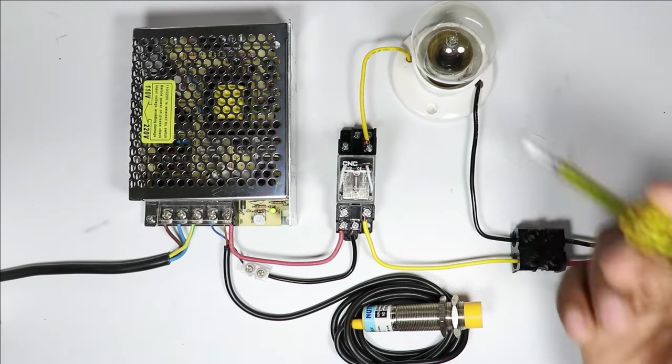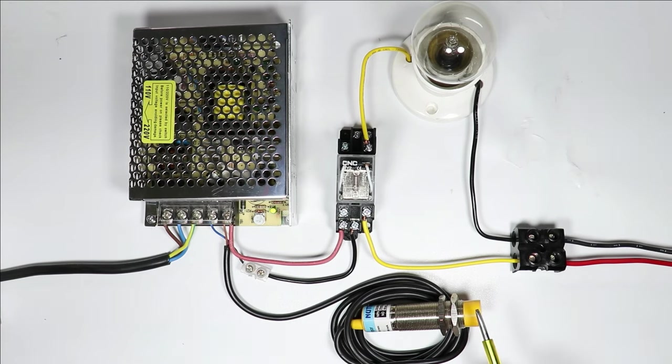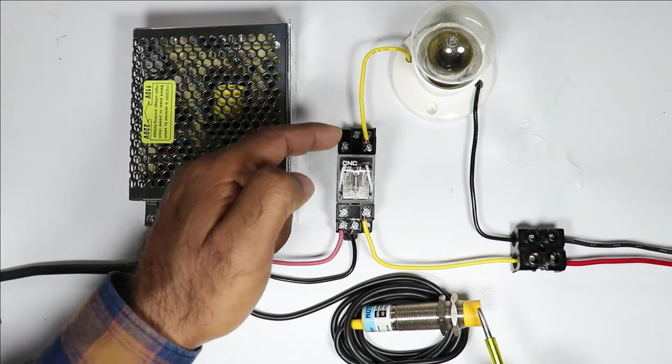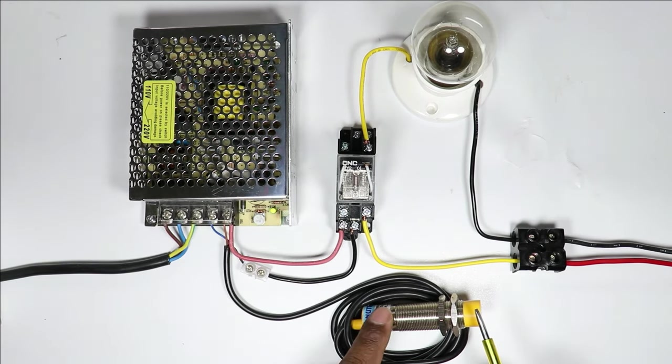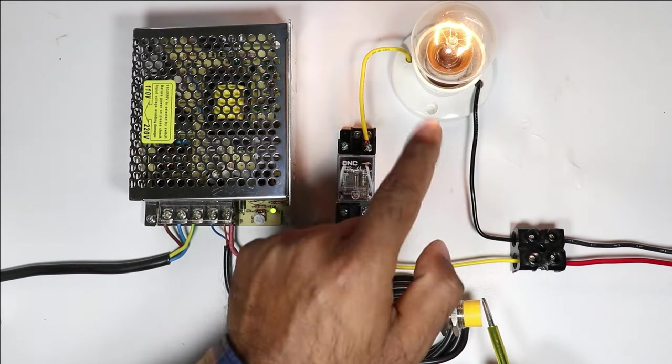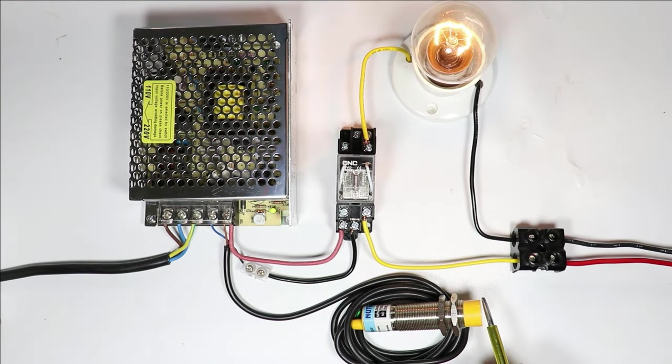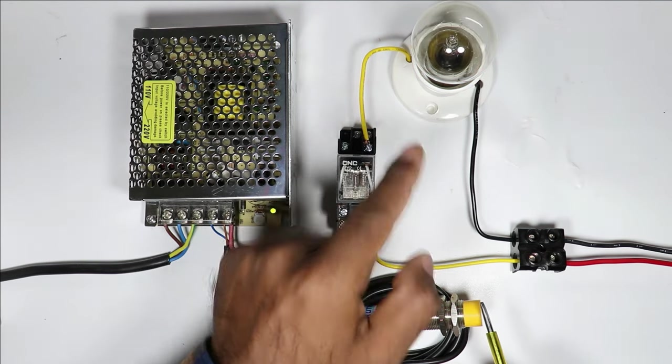Connection required to operate lamp through sensor is now completed. I used NO contact of relay for connection. So what's happening is, whenever an object is sensed by sensor, lamp turns on, and when object is removed, lamp turns off.